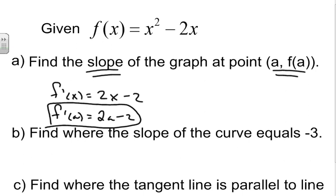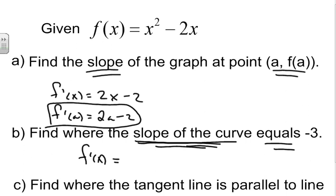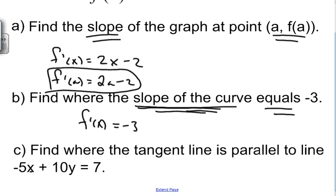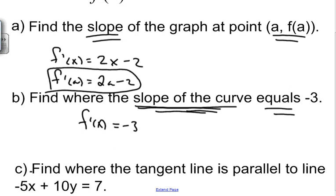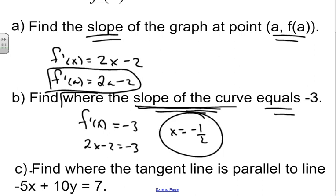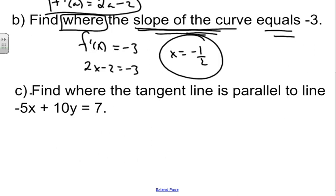For part b, we find where the slope of the curve equals negative 3. The slope of the curve is f'(x), so we set 2x minus 2 equal to negative 3 and solve for x. Adding 2 to both sides gives 2x equals negative 1, so x equals negative 1/2. Since we're looking for where, just the x value x equals negative 1/2 is our answer.